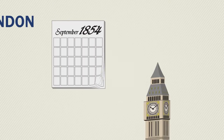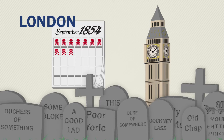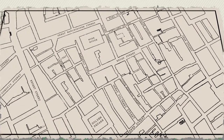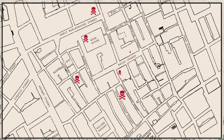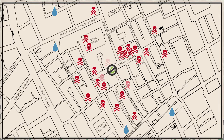In 1854, London was in the midst of a cholera outbreak that would ultimately kill 10,000 people in the city. When Dr. John Snow began plotting infection sites on a map, he noticed a cluster around a particular city water pump. That pump's water had become contaminated, and new cholera cases immediately declined after the pump was disabled.